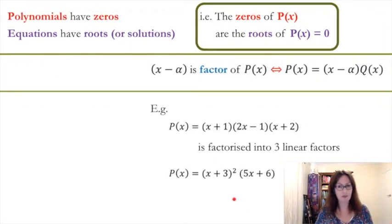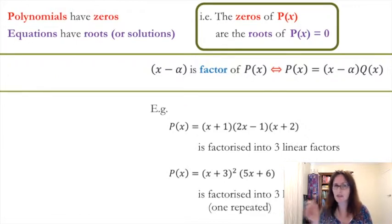What about here? What's that factorized into? How many linear factors? Three, but one's repeated. So it is three factors, but it's got the same one twice.